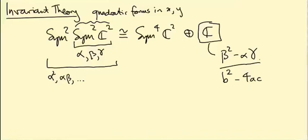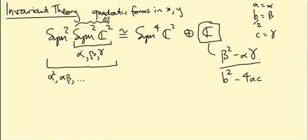The reason we're missing this factor of 4 is because we've been a bit slapdash about the correspondence. It's true that the space of quadratic forms in x and y is isomorphic as a representation of SU(2) to Sym2 of the standard representation, but the isomorphism isn't quite the one we've used so far. The correct isomorphism has beta equals b over 2, alpha equals a, and gamma equals c.